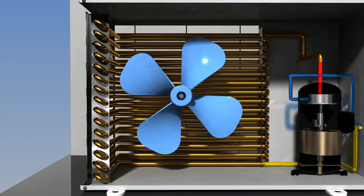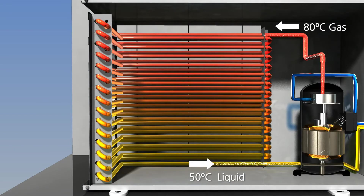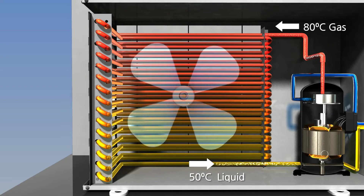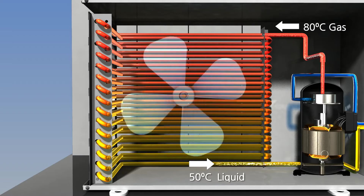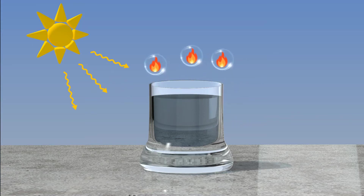Compressed refrigerant is then sent to a condenser to be pressed into liquid. The temperature of the refrigerant after passing through the compressor is above 80°C, putting it in a hot gas state. This refrigerant passes through the condenser and is slowly cooled down by chilled air from fans. When liquid evaporates, it absorbs heat and becomes gas; as it transforms into gas, its kinetic energy becomes stronger.